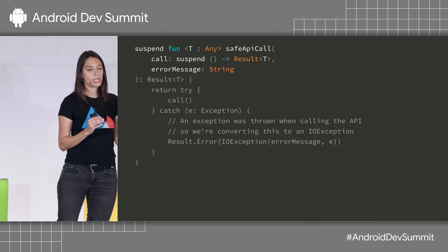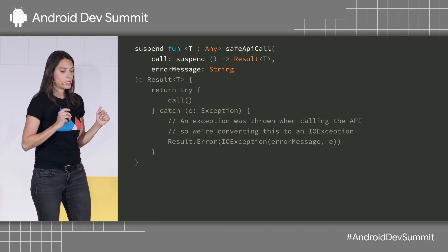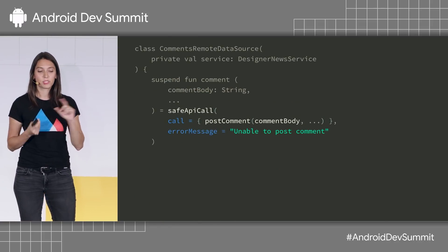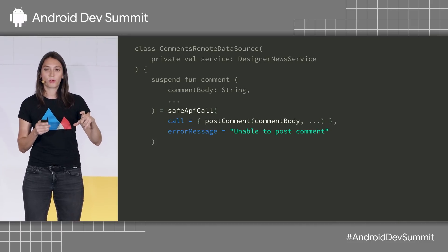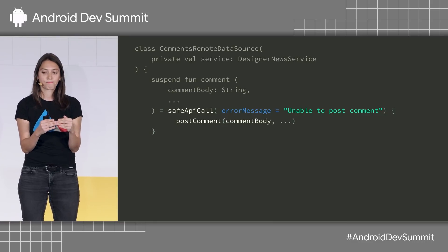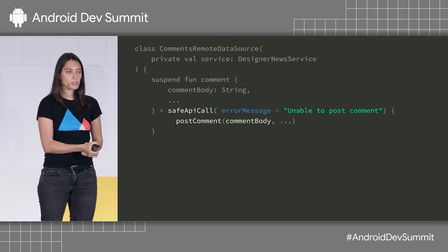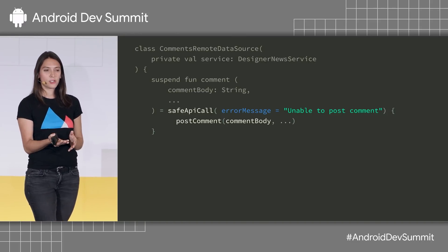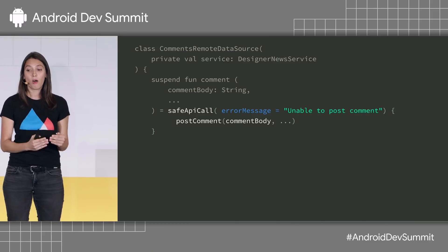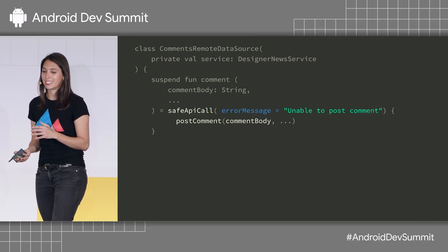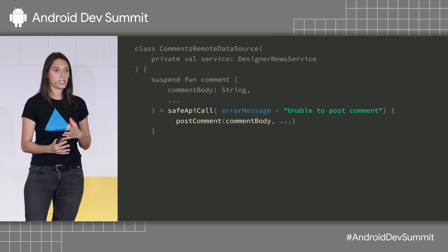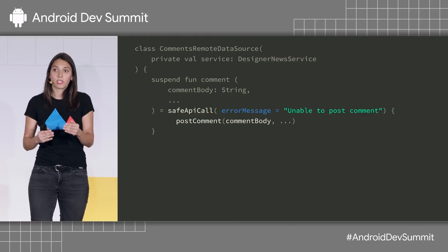This safe API call has the call as a first parameter and the error message as the second. In Kotlin, if the last parameter of a method is a lambda, you can use it as a trailing lambda. So instead of passing both parameters, you can pass the error message as a parameter of the function and use the trailing lambda syntax. The code becomes more concise, but is it really more readable? When we looked at this, it felt like what was emphasized most was the error message, when actually what matters most is the method being called — post comment. So we decided that although the code is more concise, it doesn't mean more readable. Brevity isn't necessarily a good thing — be mindful and think whether you actually need all these features or use them in the right places.